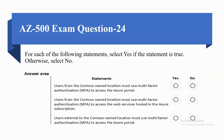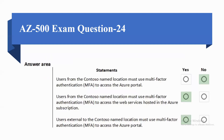The question is: select which statement is true. Statement A: Users from the Contoso named location must use MFA to access the Azure portal. Statement B: Users from the Contoso named location must use MFA to access web services hosted in the Azure subscription. Statement C: Users external to the Contoso named location must use MFA to access the Azure portal.